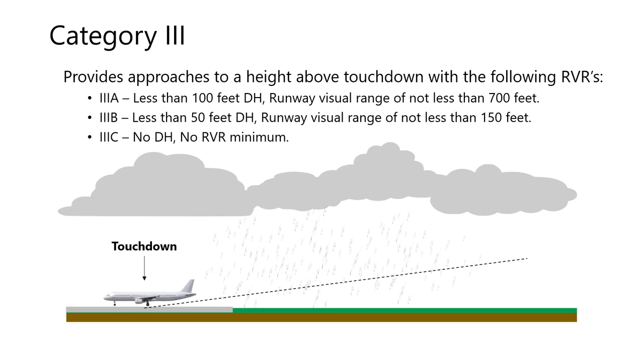Category 3B less than 50 feet decision height with a runway visual range of not less than 150 feet. Category 3C with no decision height requirements and no RVR minimums.